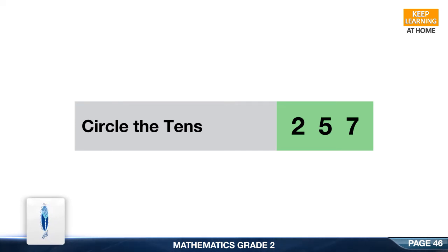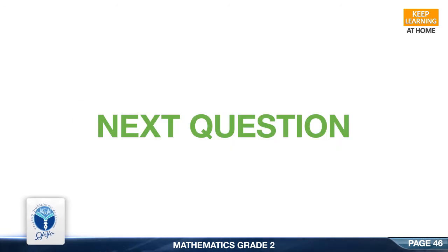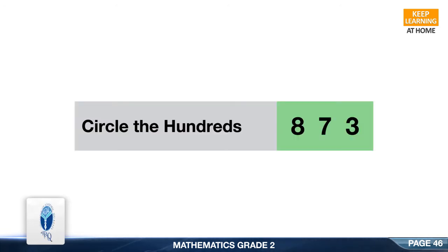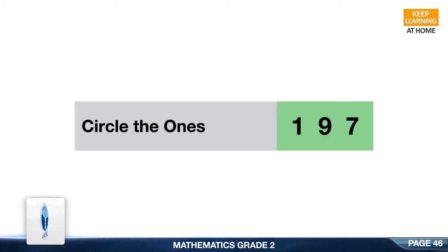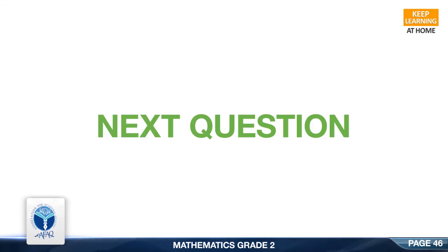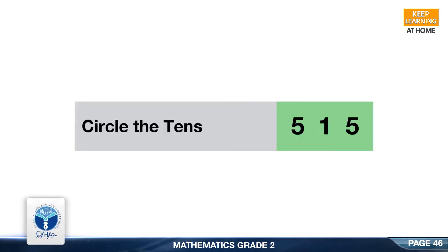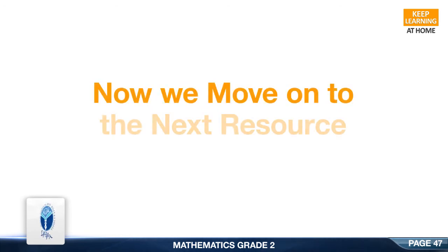Next question: Circle the tens in 257. Good, it is 5. Next question: Circle the hundreds in 873. Good, it is 8. Next question: Circle the ones in 197. Good, it is 7. Next question: Circle the tens in 515. Good, it is 1.